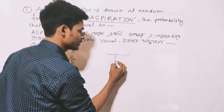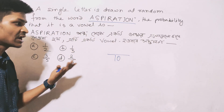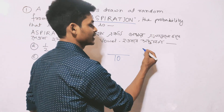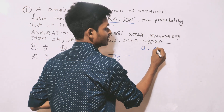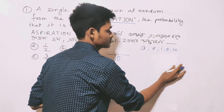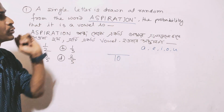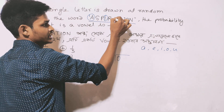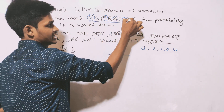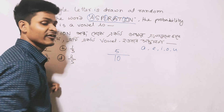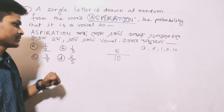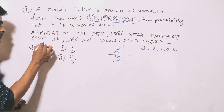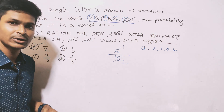The total letters is 10. The vowels are A, E, I, O, U. We can identify the vowels in ASPIRATION: A, I, I, A, O — that gives us 5 vowels. So the probability is 5 by 10, which simplifies to 1 by 2. The answer is 1 by 2, which is the correct option.